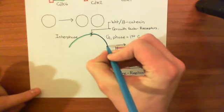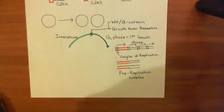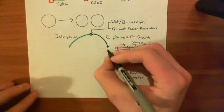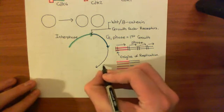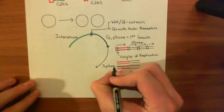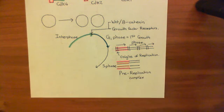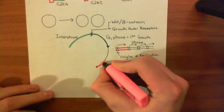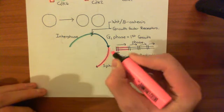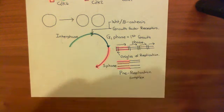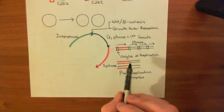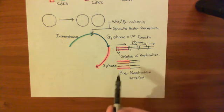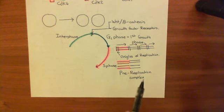You then move into the S phase of the cell cycle — the synthesis phase — where you actually replicate the DNA. In S phase, the pre-replication complexes on the origins of replication are modified slightly to make them functional, allowing DNA polymerase to bind and begin replication.